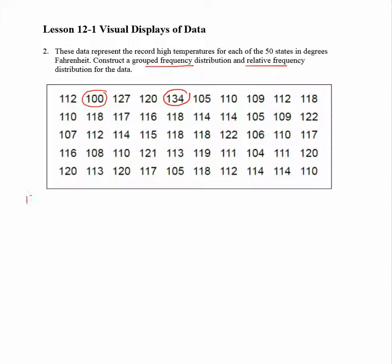The first step for constructing a frequency distribution is to calculate the range. The range is the spread of the data from low to high. So just subtract 134 and 100 and you'll get 34. So the range of the data is 34 numbers.